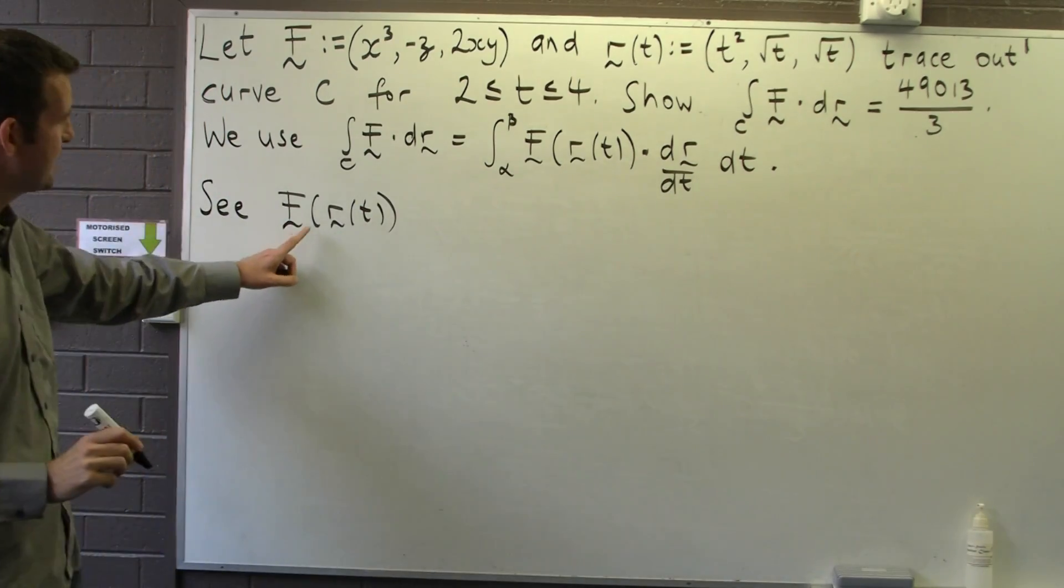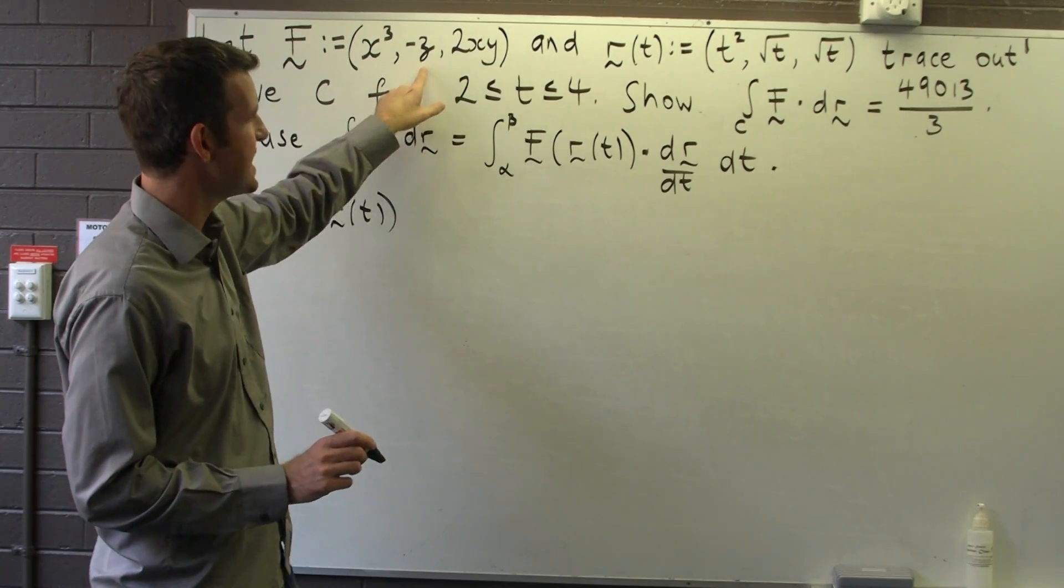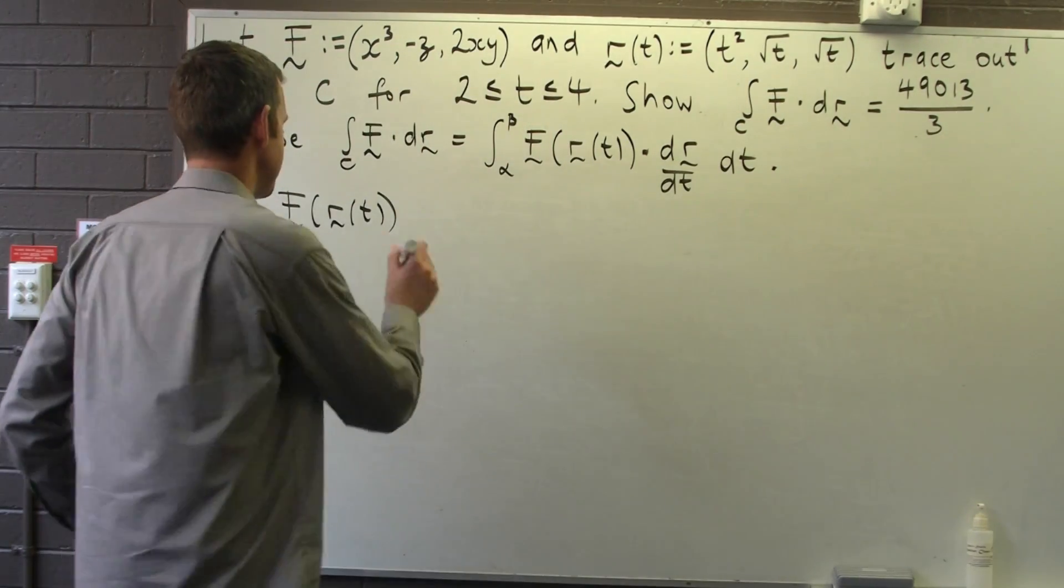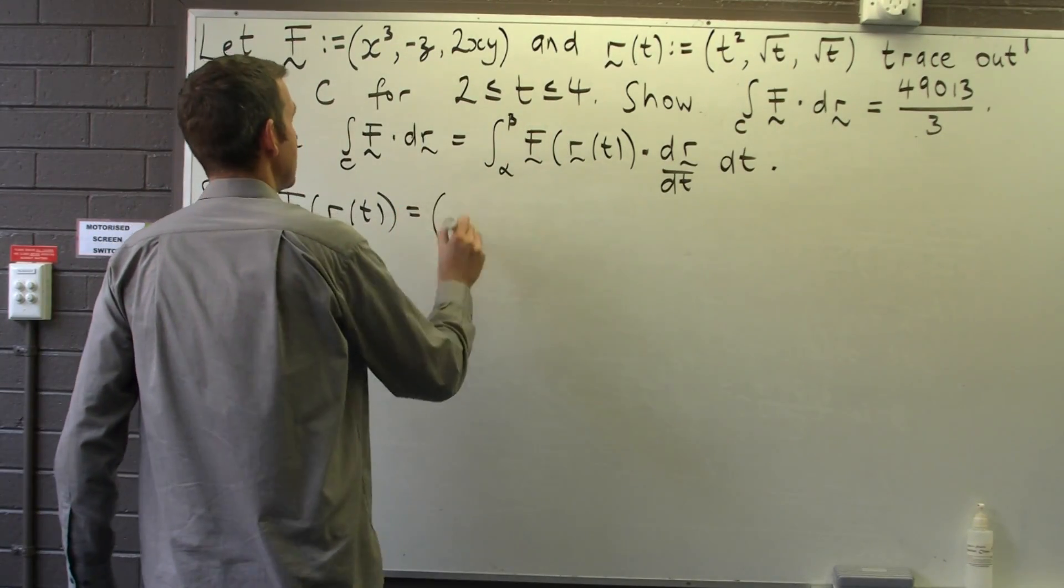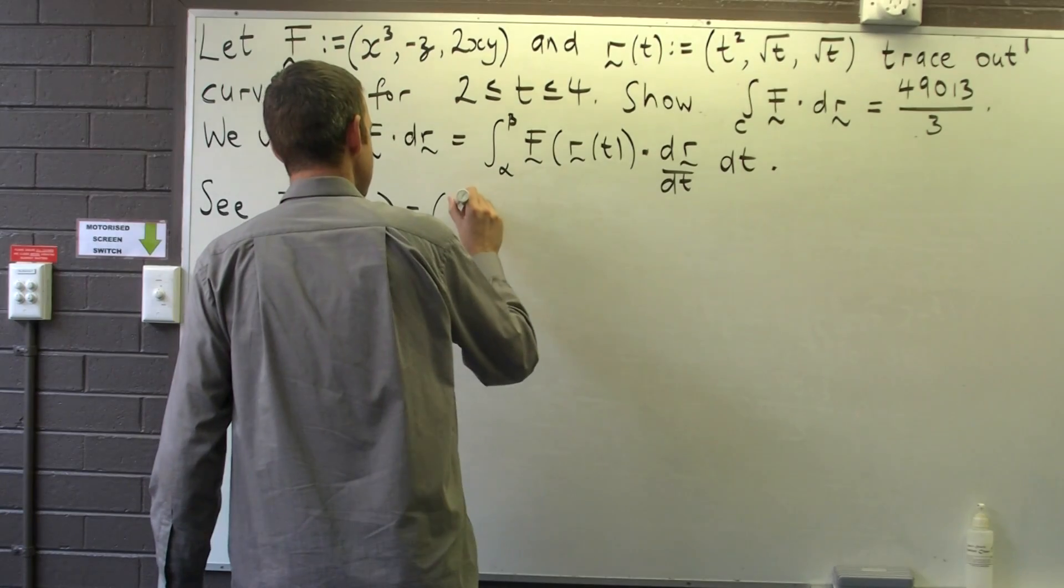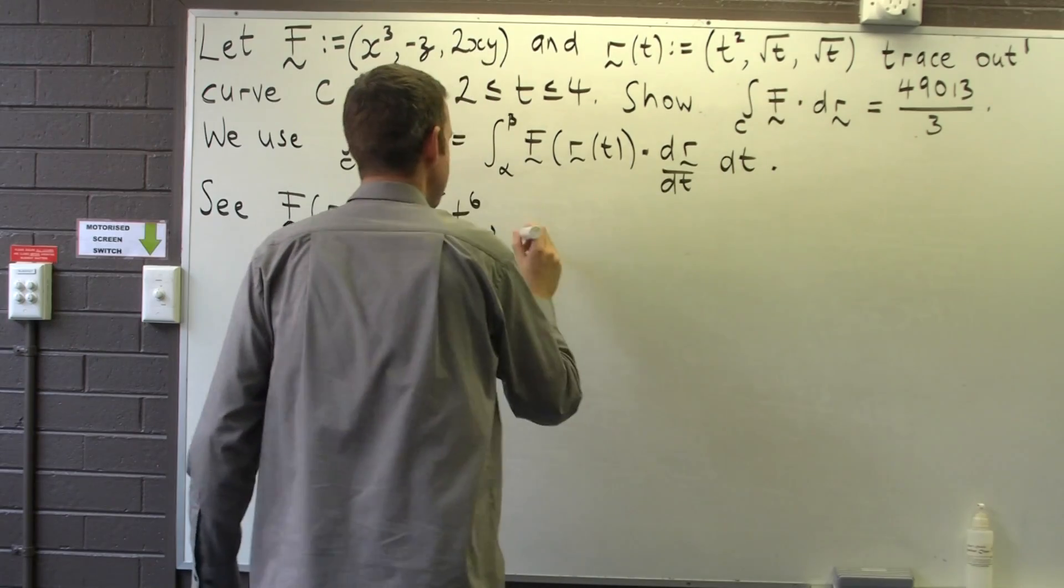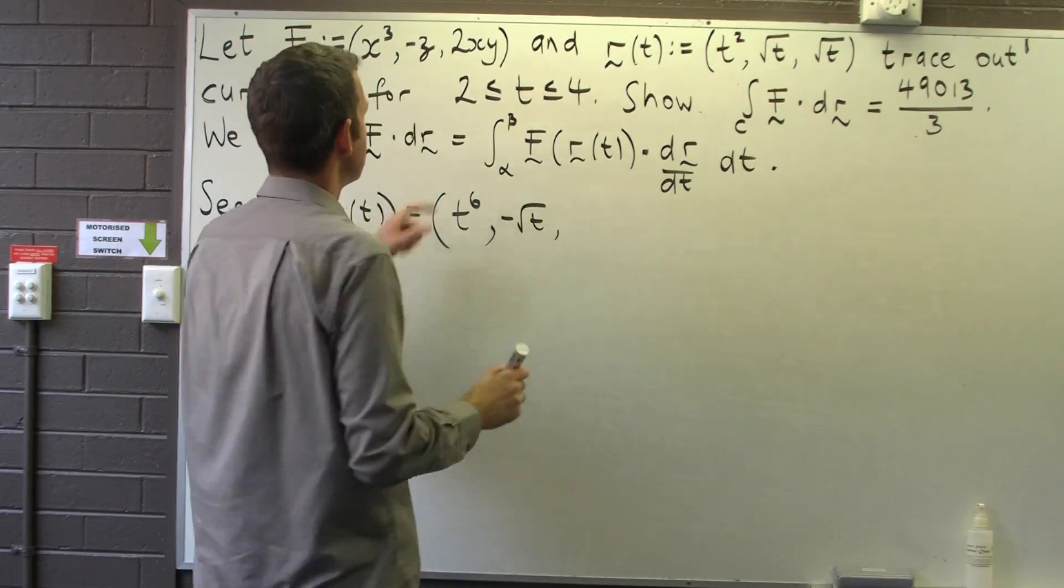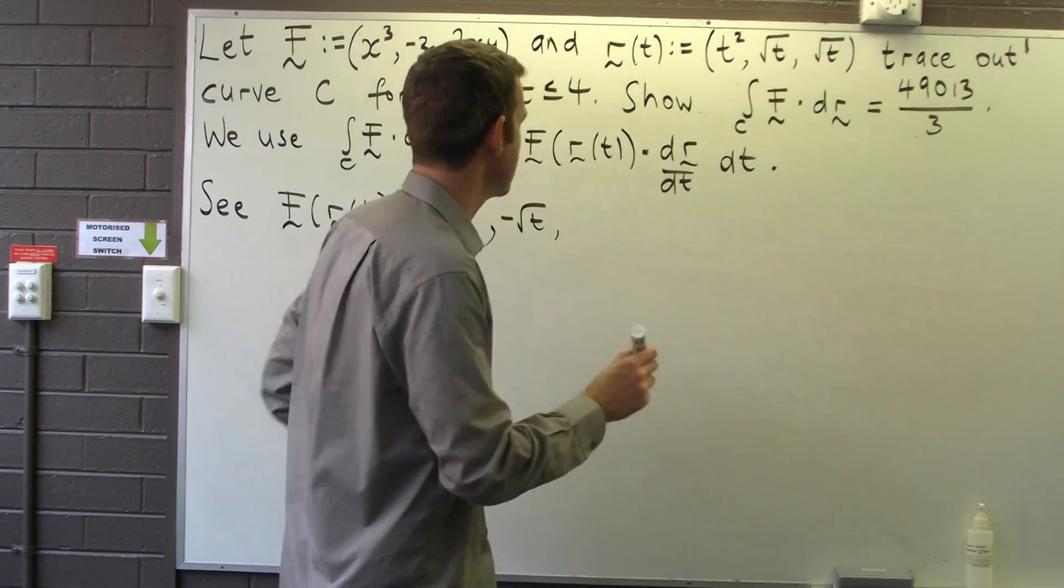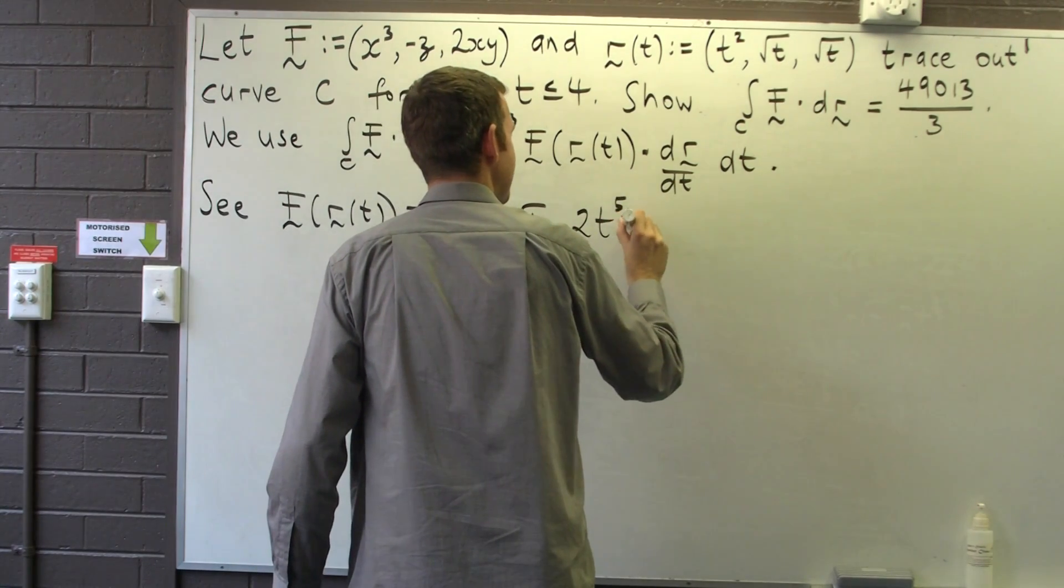So F along r - what we do is we replace x, y, and z with t squared, root t, and root t respectively. So x cubed is going to become t squared cubed, which is t to the sixth, minus z is going to become minus root t. 2xy is going to become 2t squared times root t, which is just 2t to the 5 on 2.